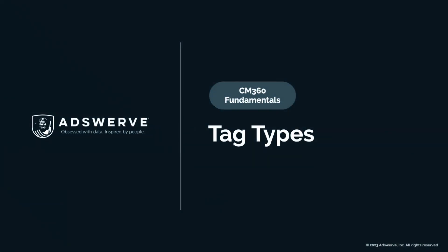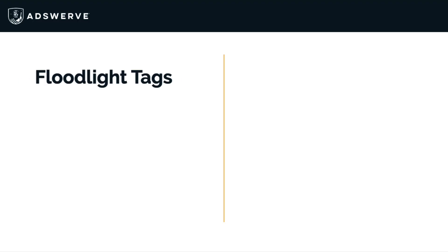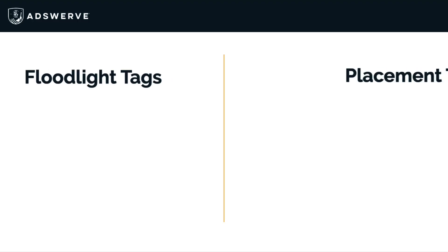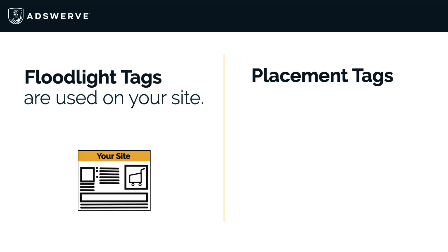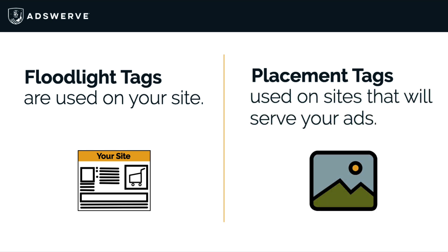Welcome to your Campaign Manager 360 Fundamentals training series. In this video, we're comparing the two basic tag types in CM360: floodlight tags and placement tags. Floodlight tags are the ones you use on your own site, while placement tags go on the websites where your ads are served.